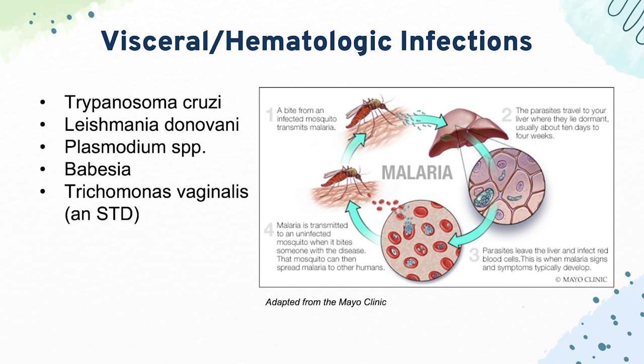Then we have Trichomonas vaginalis, which is actually an STD. It causes foul-smelling green discharge and a strawberry appearance to the cervix. An important note: you give metronidazole as treatment to the patient, but also to the partner as prophylaxis.